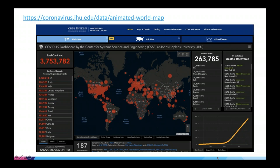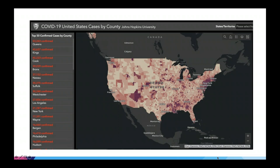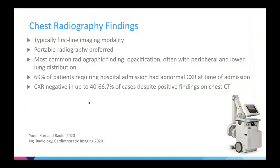I just want to delve into the imaging findings, mostly looking at chest findings. The first modality you can look at would be chest x-ray. It's better to use portable x-ray. At Mount Sinai, we had tents across the street at Central Park with about 45 beds, and we deployed portable x-ray immediately with these patients. The most common finding is going to be opacification, often with peripheral distribution. About 70% of patients requiring hospitalization had an abnormal chest x-ray. However, some patients with mild disease may have a normal or negative x-ray despite positive findings on chest CT.